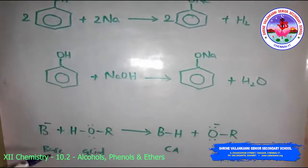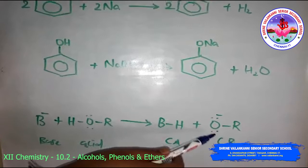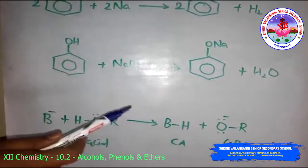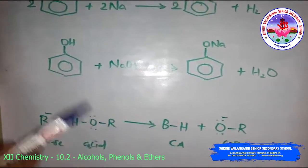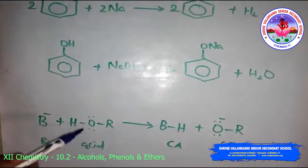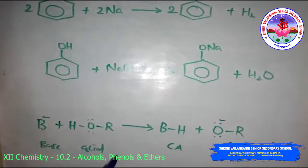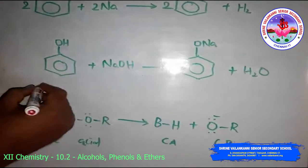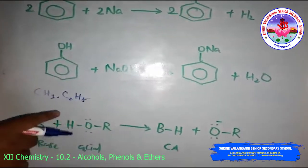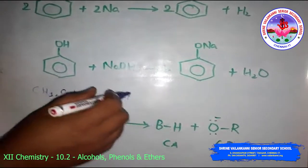Alcohols and phenols are Brønsted acids — they can donate a proton to a stronger base. A base B reacts with the acid to form BH⁺ (conjugate acid) and the conjugate base. The acidic character of alcohols is due to the polar nature of the O-H bond. Electron-releasing groups such as C₂H₅ and CH₃ increase electron density on oxygen, decreasing the polarity of the O-H bond.